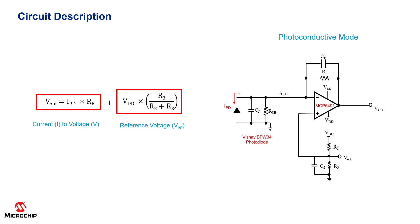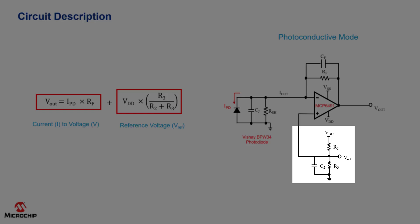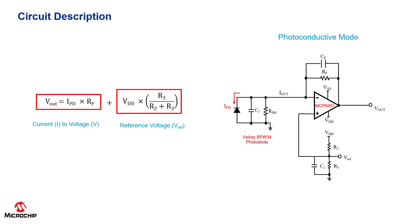The second part of the equation is the reference voltage or Vref. A reference voltage is used to bias the output voltage and it is applied to the op-amp's non-inverted input to prevent the output from saturating to the negative supply rail in the absence of input current.